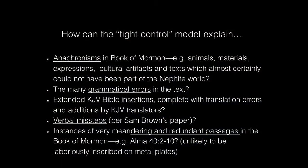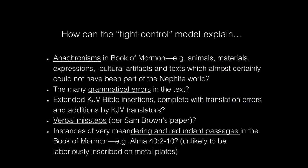Some of the questions that come up: when you use the tight control model, what do you do with anachronisms in the Book of Mormon? If you have a loose control model, you have more flexibility in understanding where those anachronisms may have entered the text, or whether there are 19th century elements that don't necessarily make sense. The loose control model gives you more wiggle room. Grammatical errors, certain insertions of the King James Version of the Bible — which include translation errors in the KJV itself — verbal missteps, and redundant passages. There are some redundancies in the Book of Mormon.